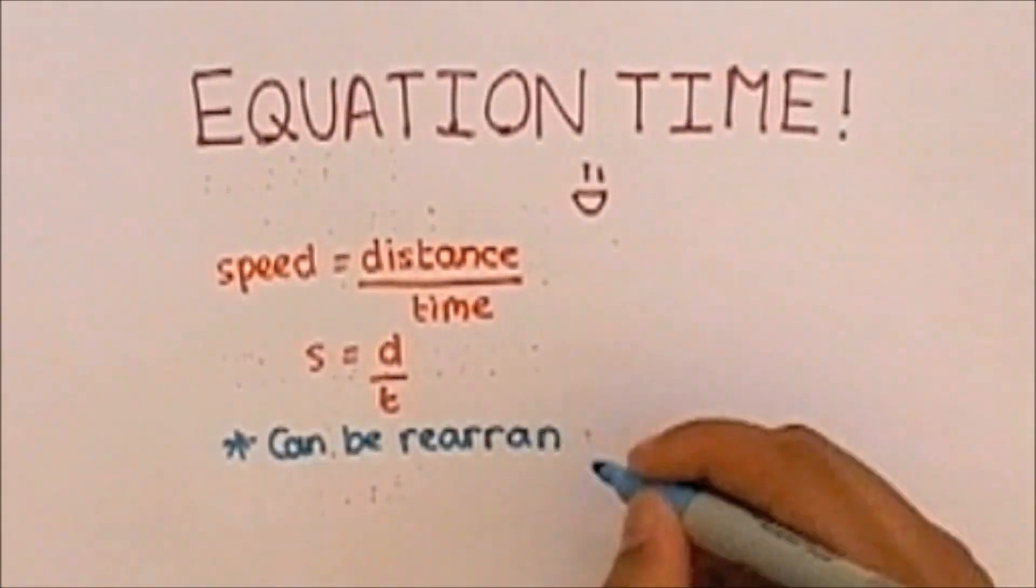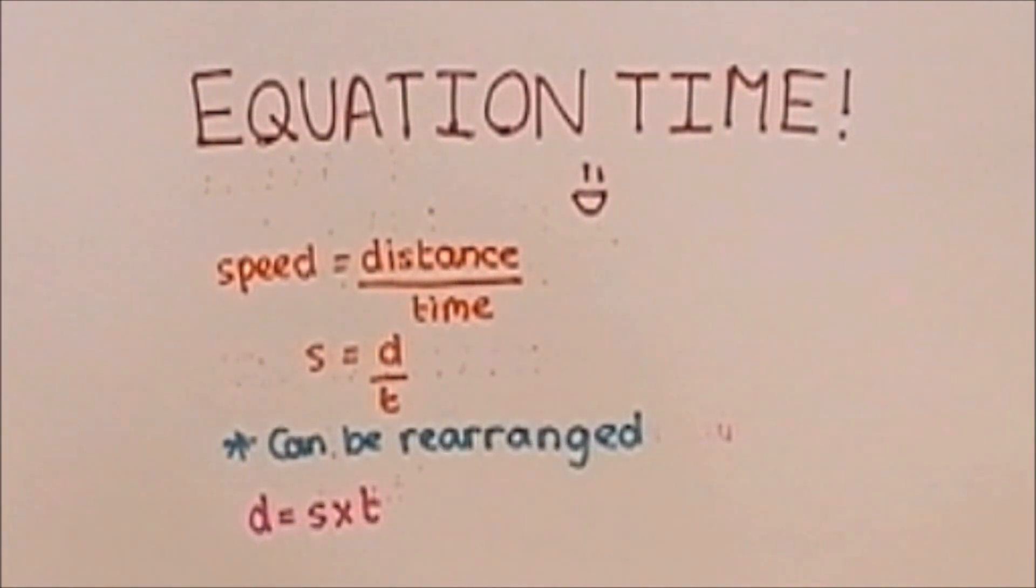This equation can be rearranged to also find distance: speed times time, and time: distance over speed.